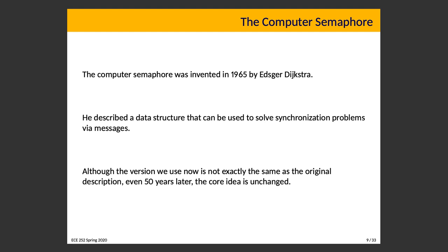Dijkstra is a brilliant computer scientist who is frequently described as eccentric in textbooks, which seems a bit mean. He described a data structure that can be used to solve synchronization problems via messages. Although the version we use now is not exactly the same as the original description from over 55 years ago, the core idea is unchanged: signaling used to communicate between different threads or processes, and it is tremendously useful in solving all our synchronization problems.